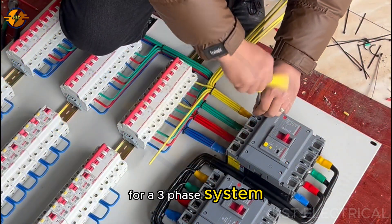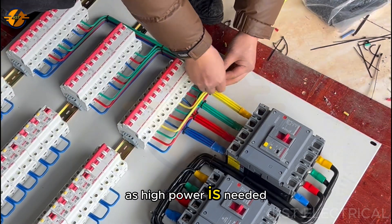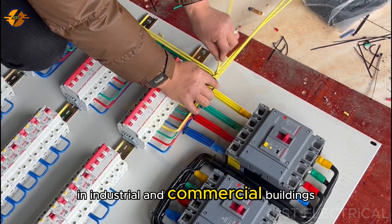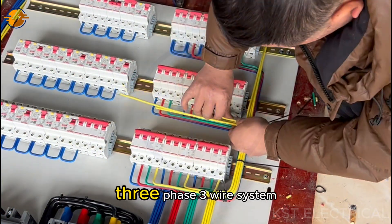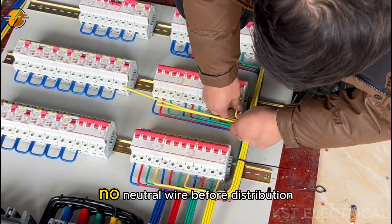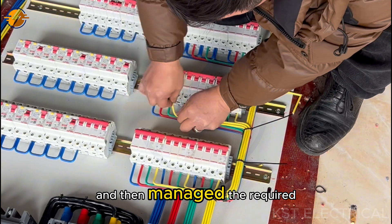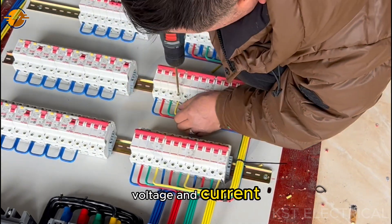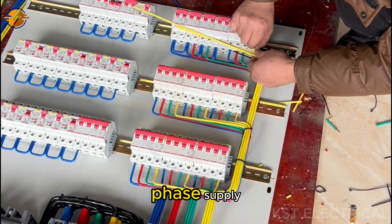For a three-phase system, the arrangement can be different for different voltage levels. As high power is needed in industrial and commercial buildings, they are connected to the three-phase delta connection three-phase three-wire system with no neutral wire before the distribution transformer, and then manage the required voltage and current according to system requirements in three-phase and single-phase supply.